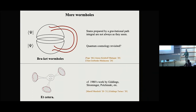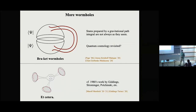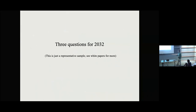There are many more wormholes and higher topologies people have been discussing. To some extent this is a throwback to the 1980s — in a good way — when people were studying the Euclidean gravitational path integral. Now we're revisiting those ideas with the benefit of all the tools developed in AdS/CFT and the connections to quantum information developed over the last ten years. In the last few minutes I want to go through three concrete questions that I think we can make significant progress on in the next ten years.